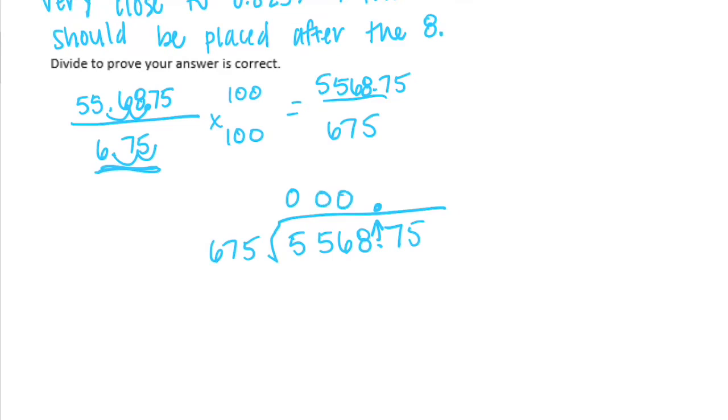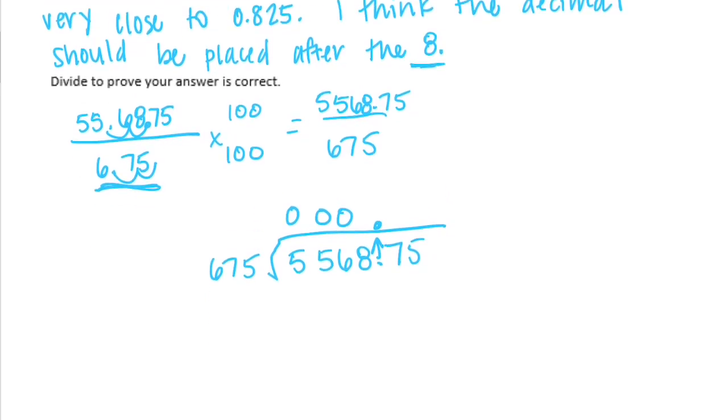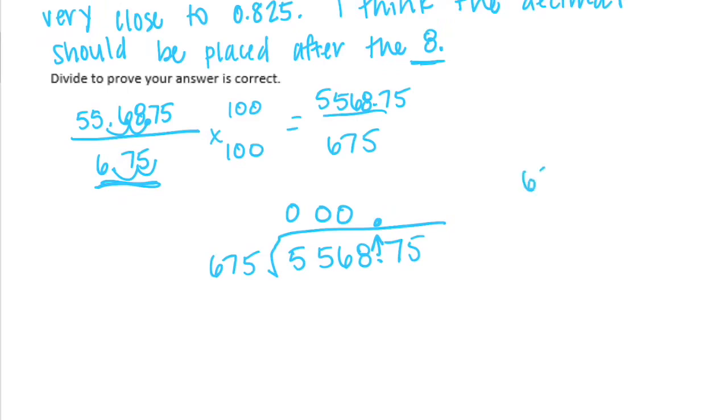Bring this decimal point straight up. 675 can't go into 5, it can't go into 55, and it can't go into 556. So how many times could it go into 5,568? Well it's a pretty big number, 5,568. 675 times 10 would be 6,750. So probably 8 or 9 times. I'm going to go with 8 because we think that the decimal should be placed after the 8. So I'm going to use that as a hint. 8 times 5 is 40. Carry the 4. 8 times 7 is 56. Plus 4 is 60. 8 times 6 is 48. Plus 6 would be 54. So 5,400.